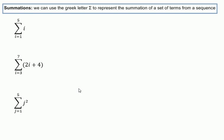Another thing associated with sequences are summations. Sometimes we want to add up a bunch of terms in a sequence, and we can use the Greek letter sigma. This is an uppercase Greek letter sigma. You might be familiar with the lowercase sigma that gets used in statistics a fair amount, but this is the uppercase letter sigma that represents the summation of a set of terms from a sequence.